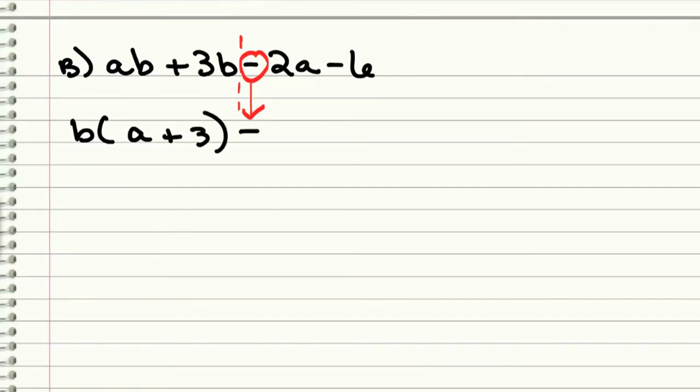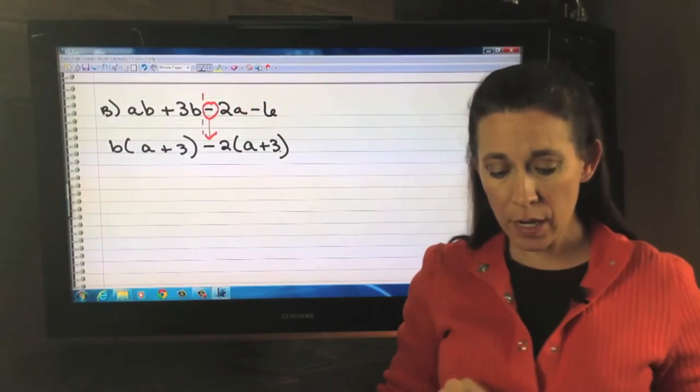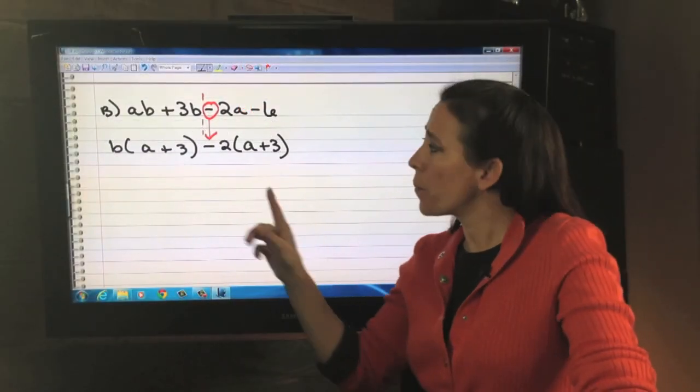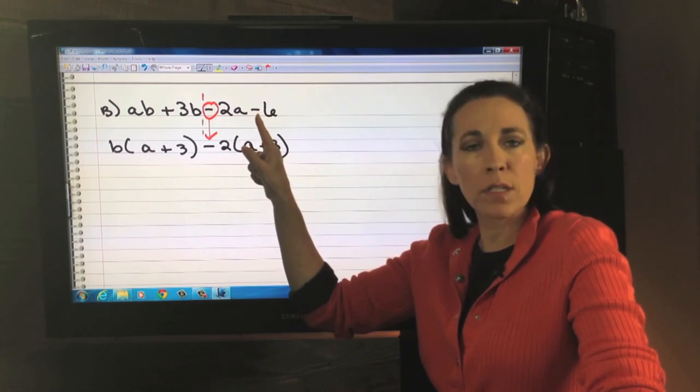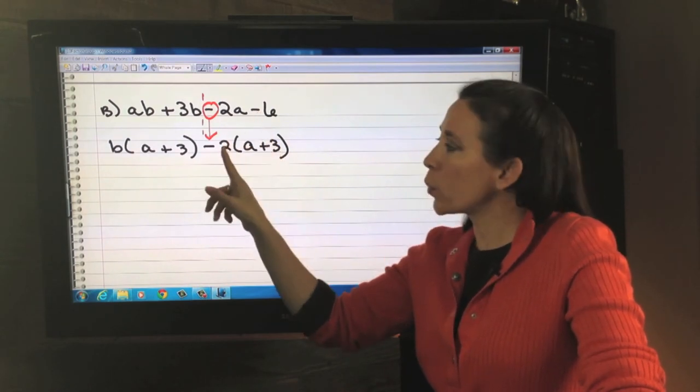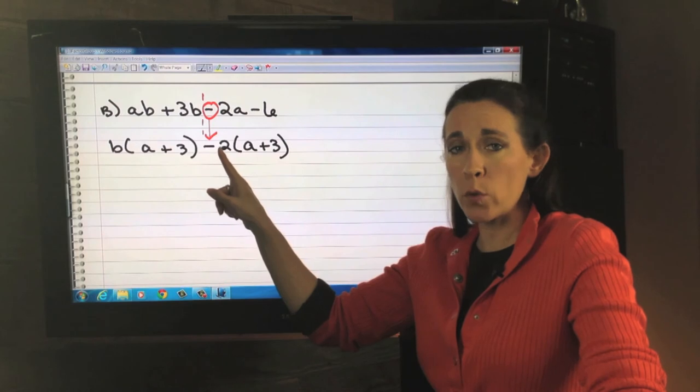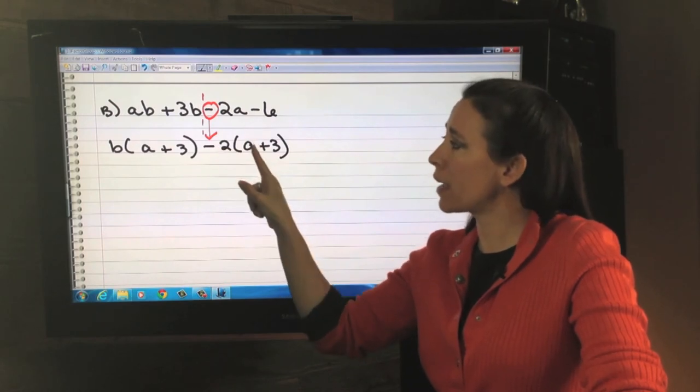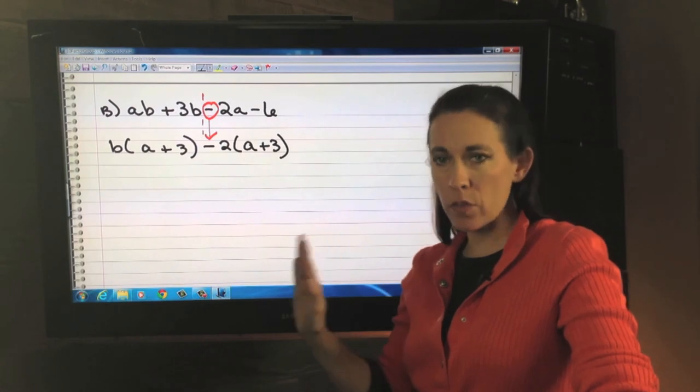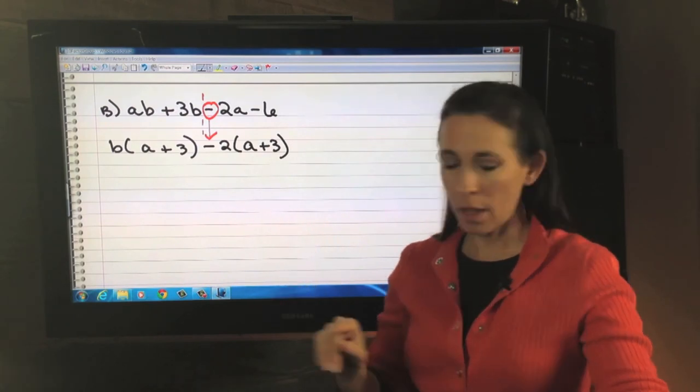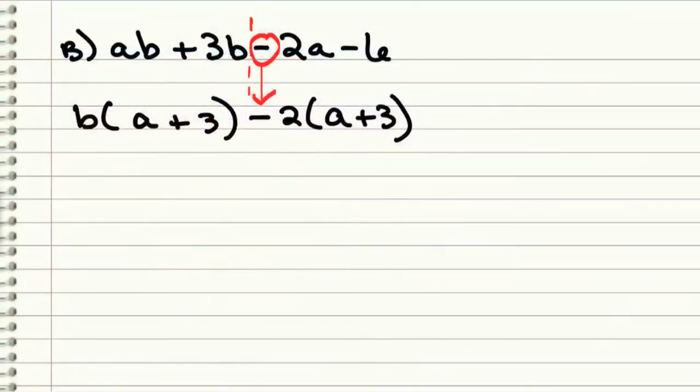We're going to take out a negative GCF from the second two. They have a 2 in common, leaving us with an a + 3. Need to be careful with your signs here. Sometimes people leave this as an a - 3 because they look up here and see that it was a negative 6. But remember, we took out a negative 2. If you were to distribute that back in, we'd have a -2a - 6. Negative 2 times a positive 3 is a negative 6.